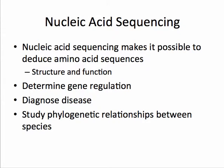To begin, nucleic acid sequencing — by knowing the order of those bases, it can help us to deduce amino acid sequences, because from the DNA, we transcribe our RNA and then translate our proteins. By knowing the sequence, we can also determine gene regulation: how genes are turned on or turned off and how they're expressed in cells.